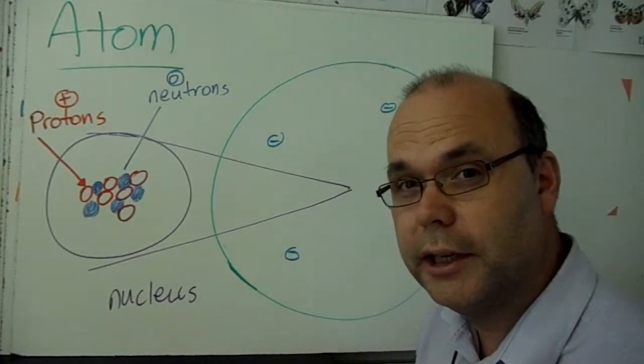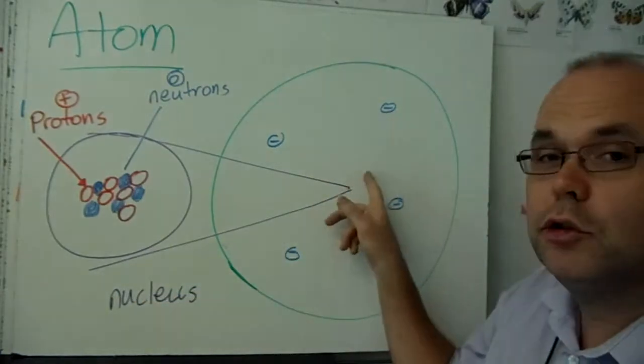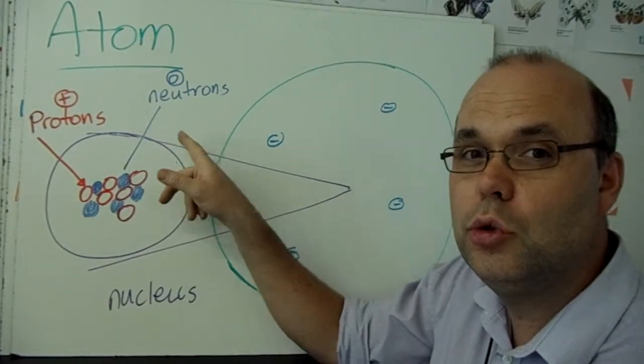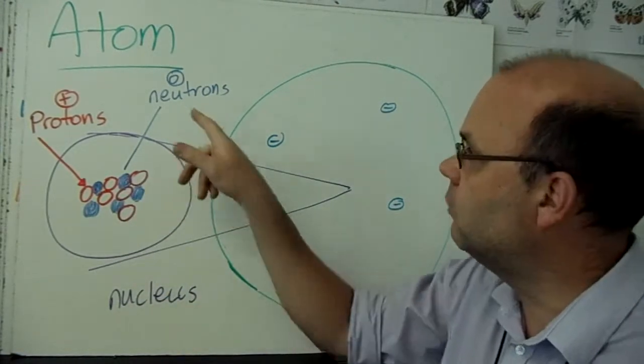You're going to want to write that down. Protons are positive. Electrons are negative. And neutrons are neutral. They're neither. They're not positive or negative. They're like zero.